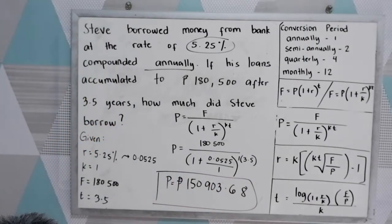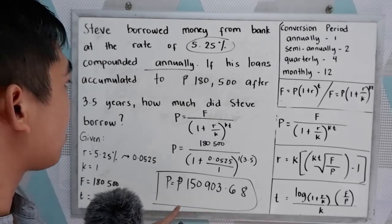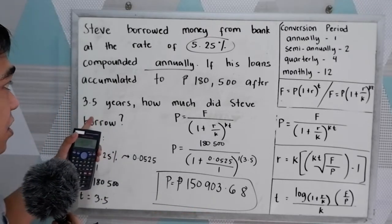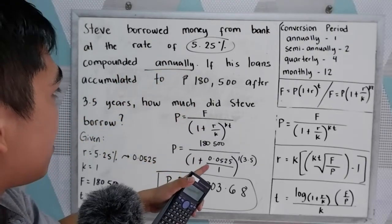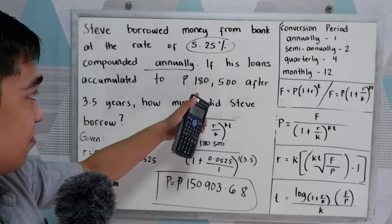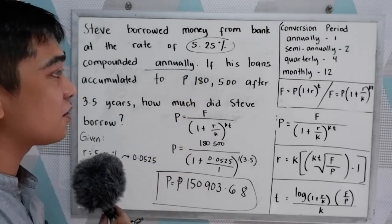So Steve borrowed 150,803.68 pesos in a bank. Then after 3.5 years, with 5.25% interest rate, the accumulated loan will be 180,500.